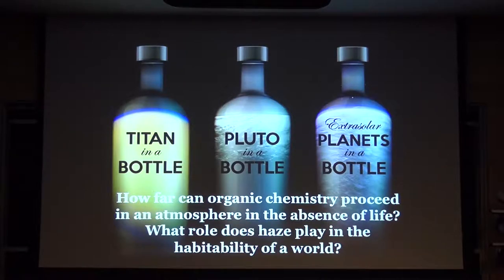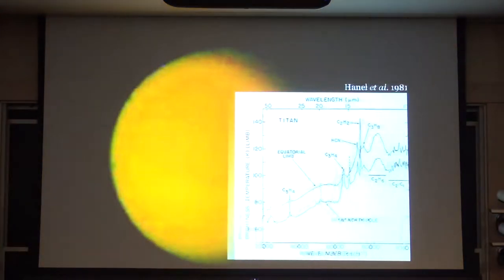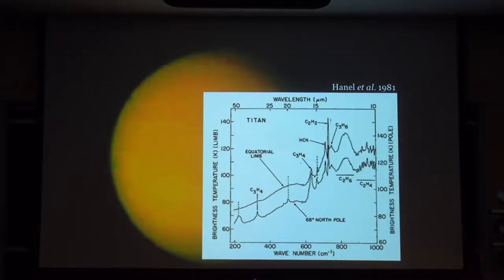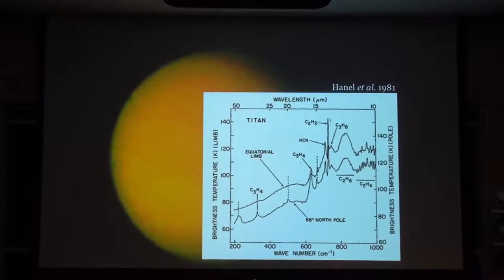In the solar system, if you want to study haze formation, the best place is Titan. When Voyager flew through the Saturn system in the early 1980s, we got back an image of a featureless orange globe—very little information for a planetary scientist. There is a global haze layer; that much we know. Voyager carried an infrared spectrometer called IRIS, and from that data we got our first glimpse into how complex organic chemistry can be in the atmosphere of a planet that presumably does not have life, or at least not the extent of life we have on Earth.